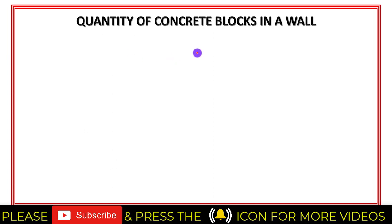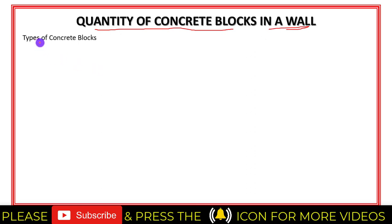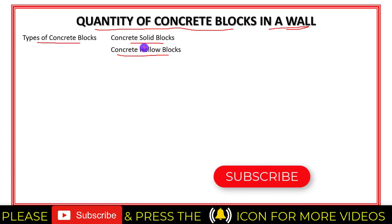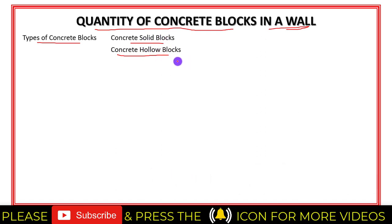There are two types of concrete blocks commonly used in building construction. One is concrete solid blocks and the other is concrete hollow blocks, and both have their own advantages. If you want me to make a separate video on concrete solid blocks and concrete hollow blocks, then let me know in the comments below.